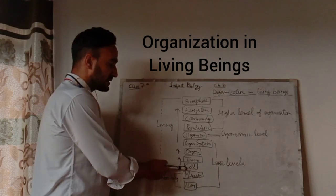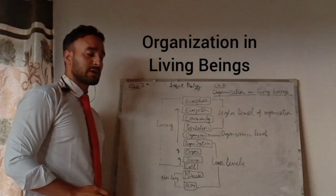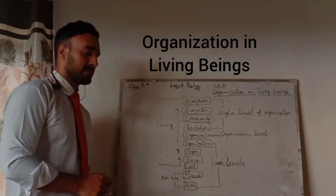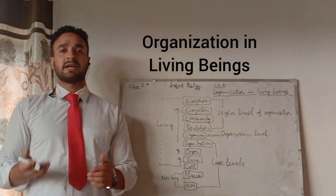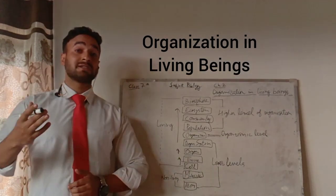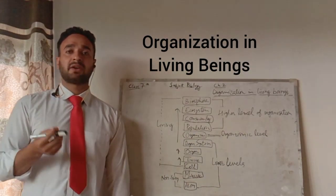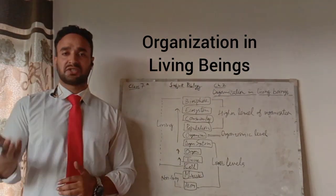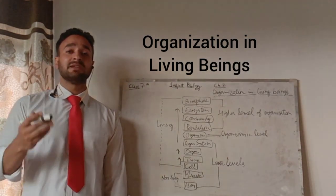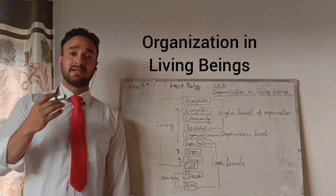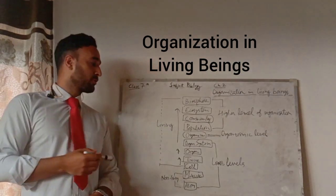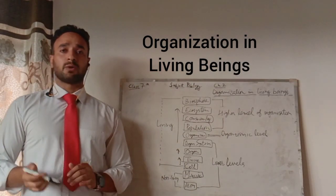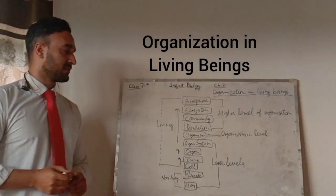From cell up to the organ system, it is known as the lower level of organization. Cells make up the tissue, tissues make the organ, and organs make the organ system. Different organs like oesophagus, stomach, and small intestines are all concerned with the same function — that is digestion. So we call this an organ system, and the name is the digestive system, meaning the arrangement of organs concerned with the same function.